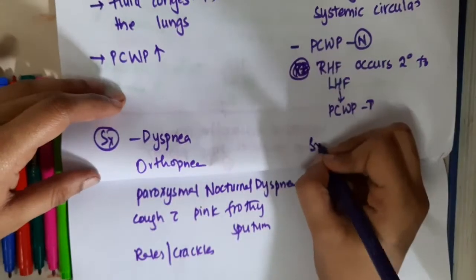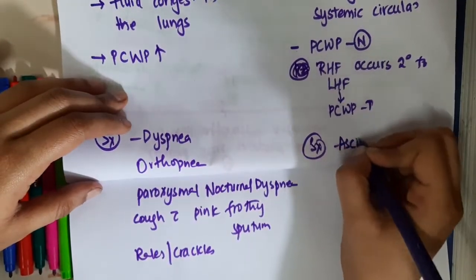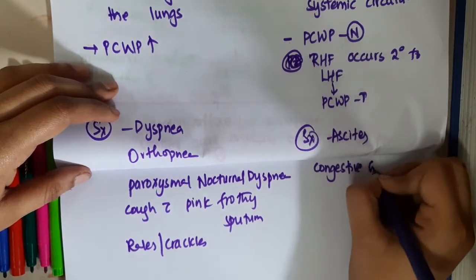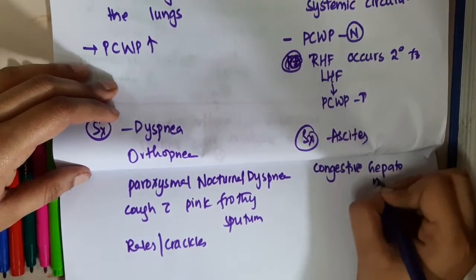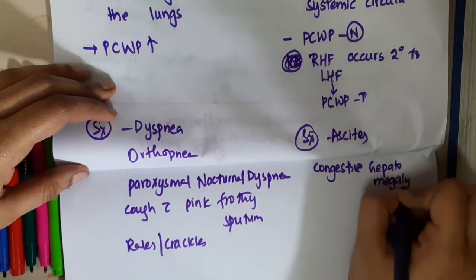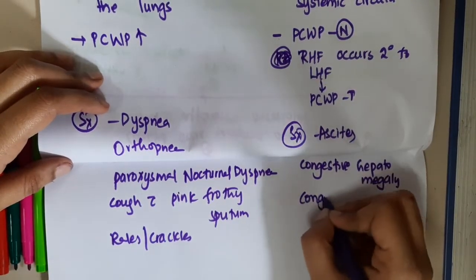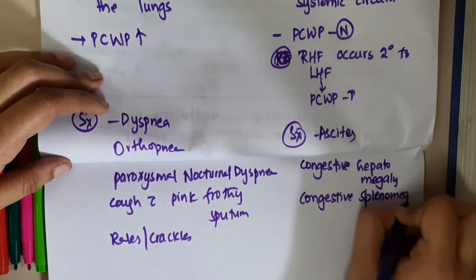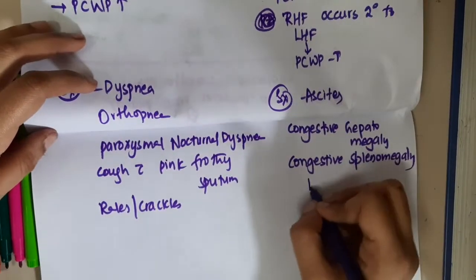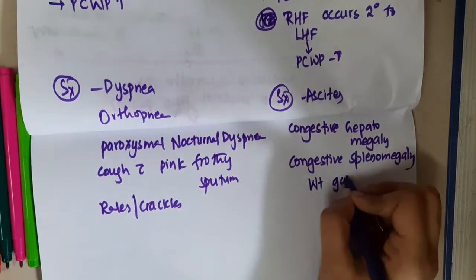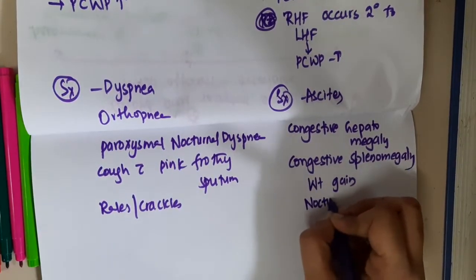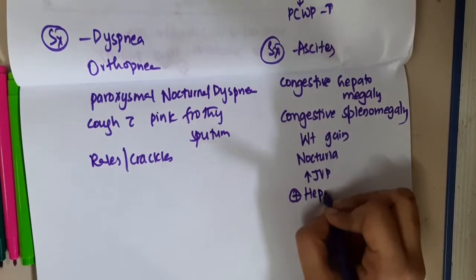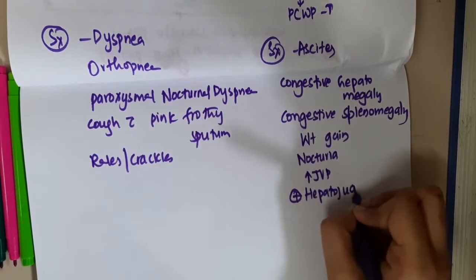If you see symptoms of right heart failure, you will see presence of ascites, congestive hepatomegaly, splenomegaly, presence of weight gain, nocturia, raised JVP, and positive hepatojugular reflex.